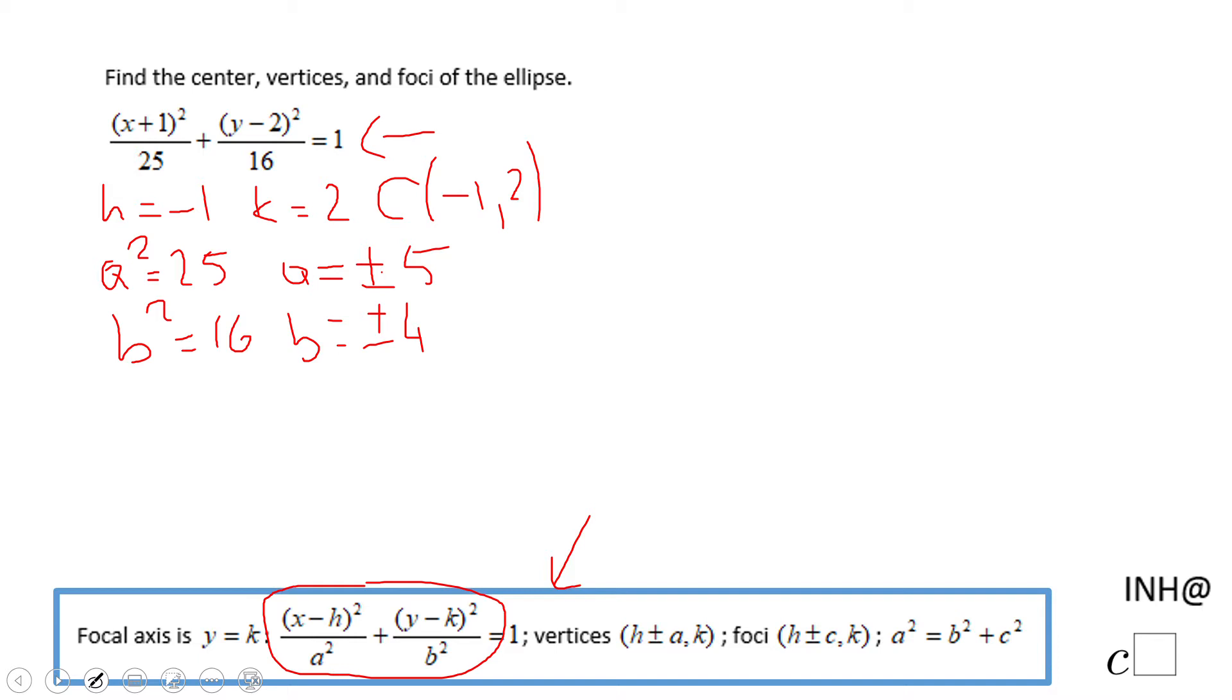So now I can do c squared. c squared will be a squared minus b squared, which will be 25 minus 16 in this case. That will be nine and c will be square root of nine which is going to be plus and minus three.